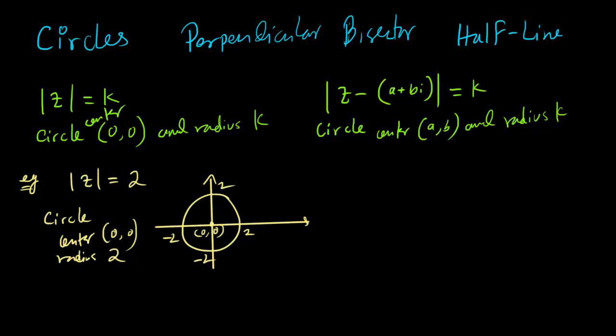So let's do another example. Suppose you have a complex number z minus (3+2i) equals to 4. Now this is going to be a circle whose center is (3,2) and whose radius is 4. That's all.